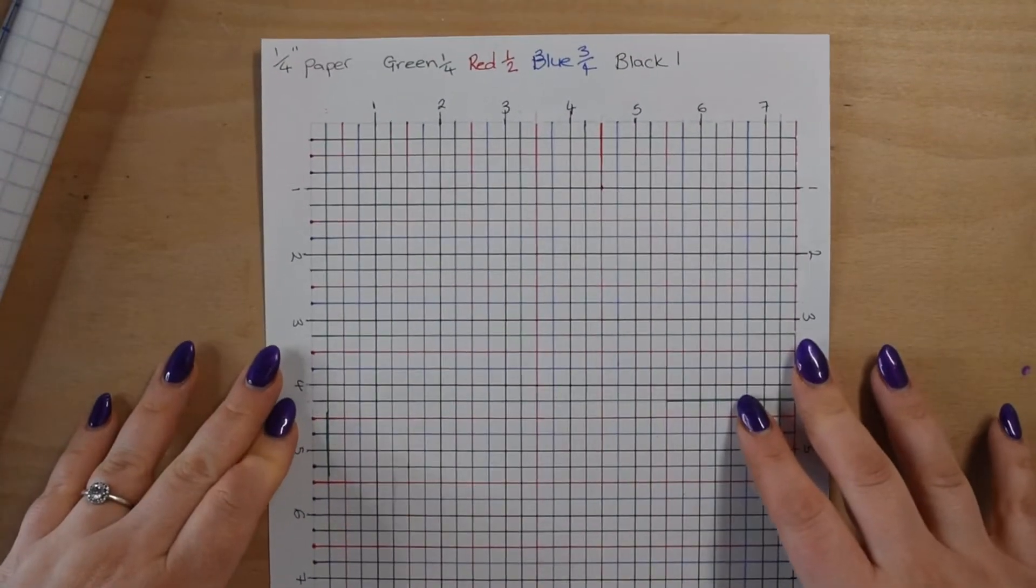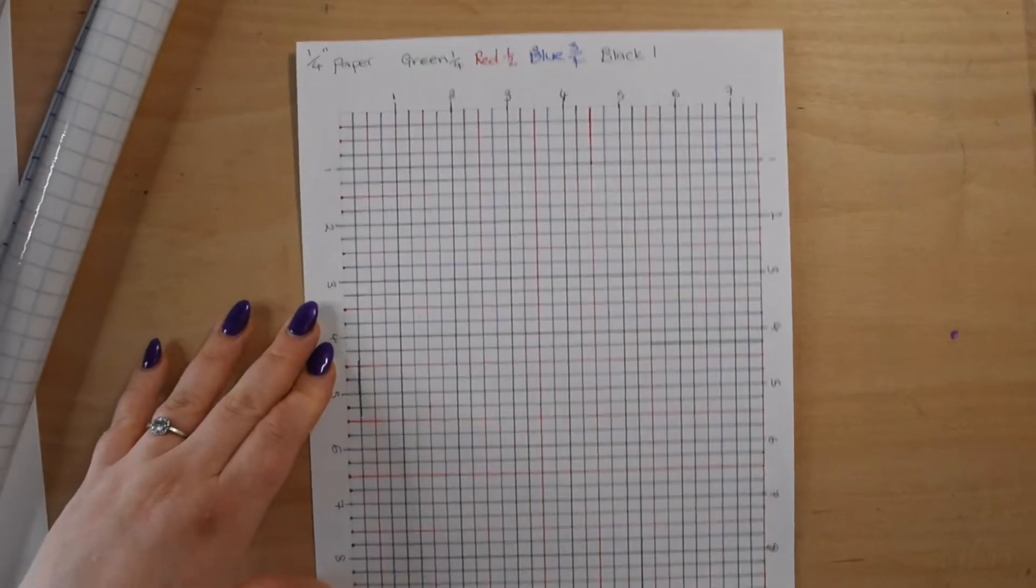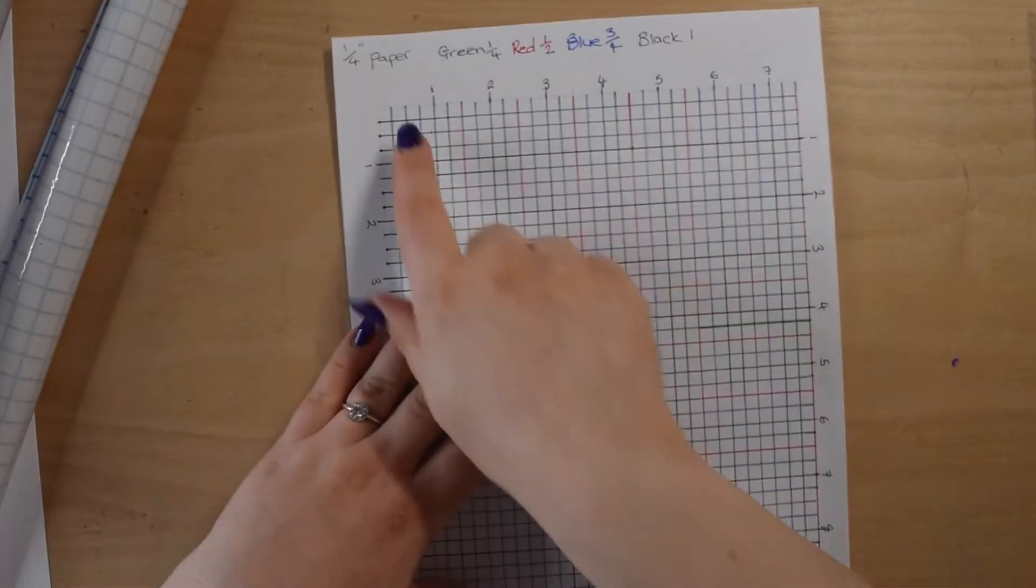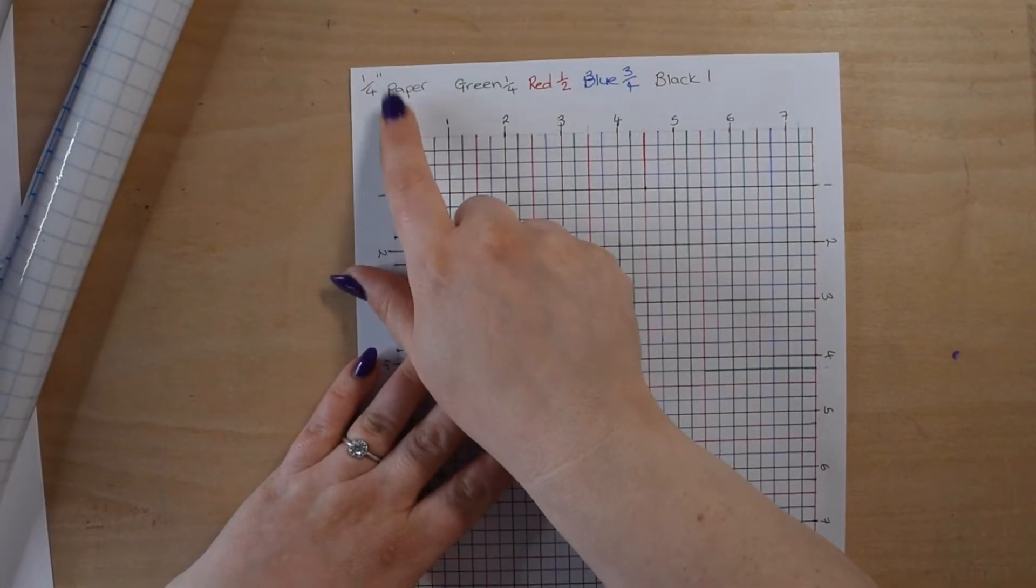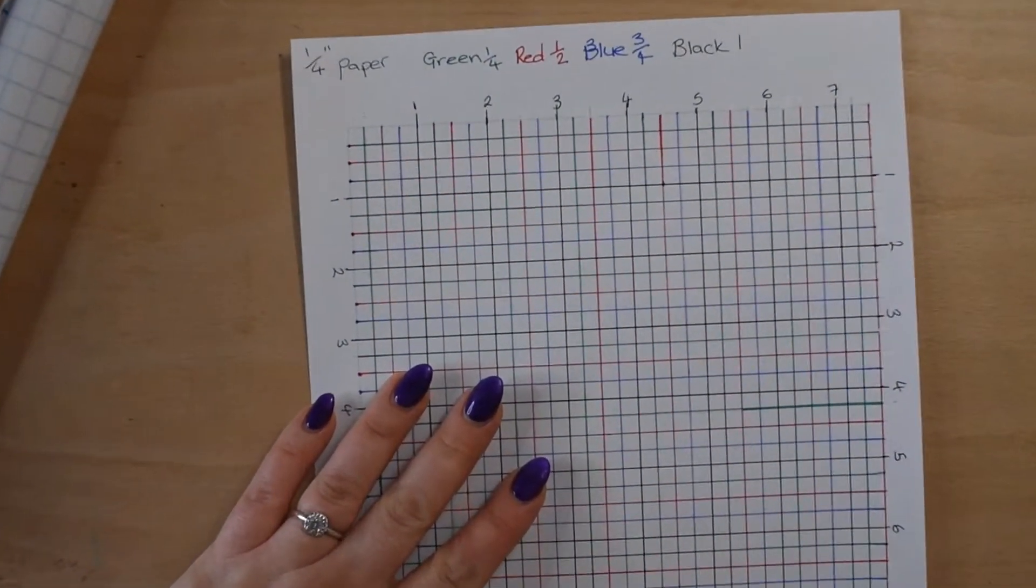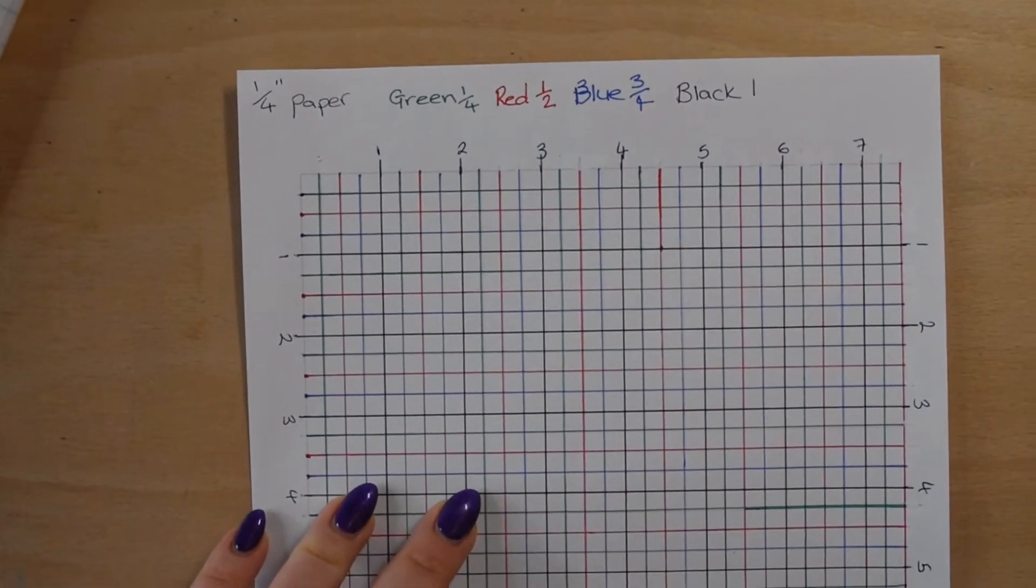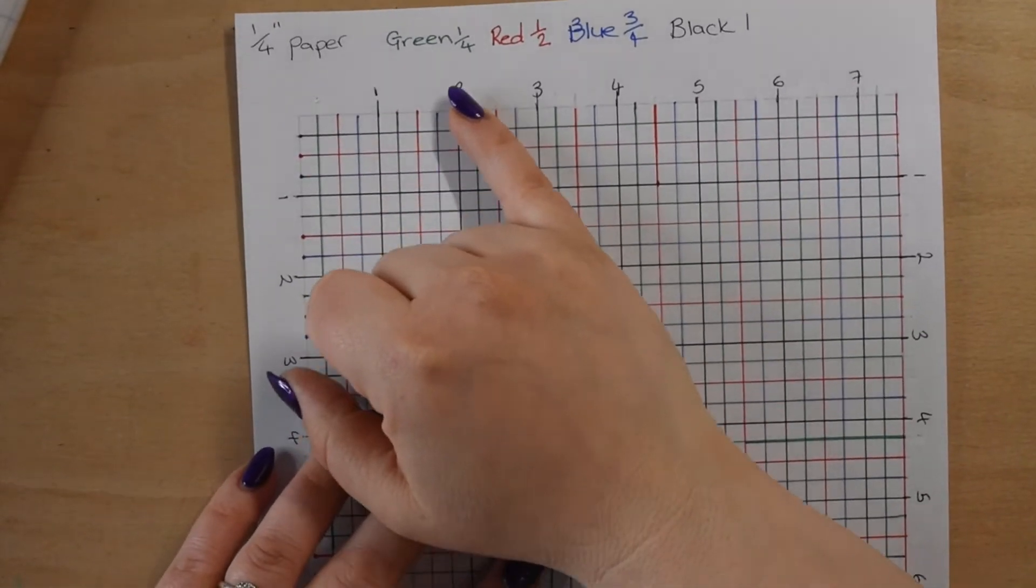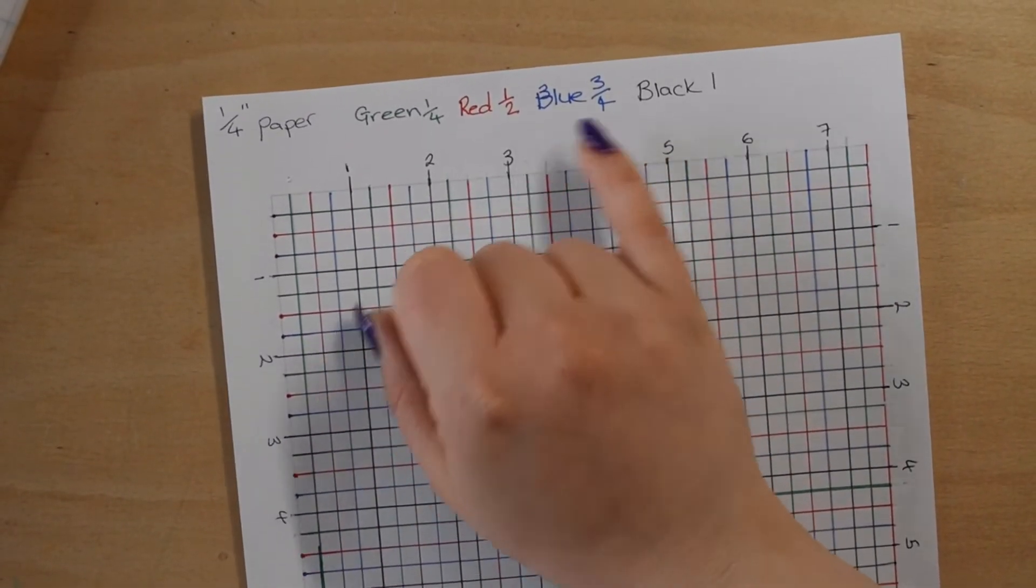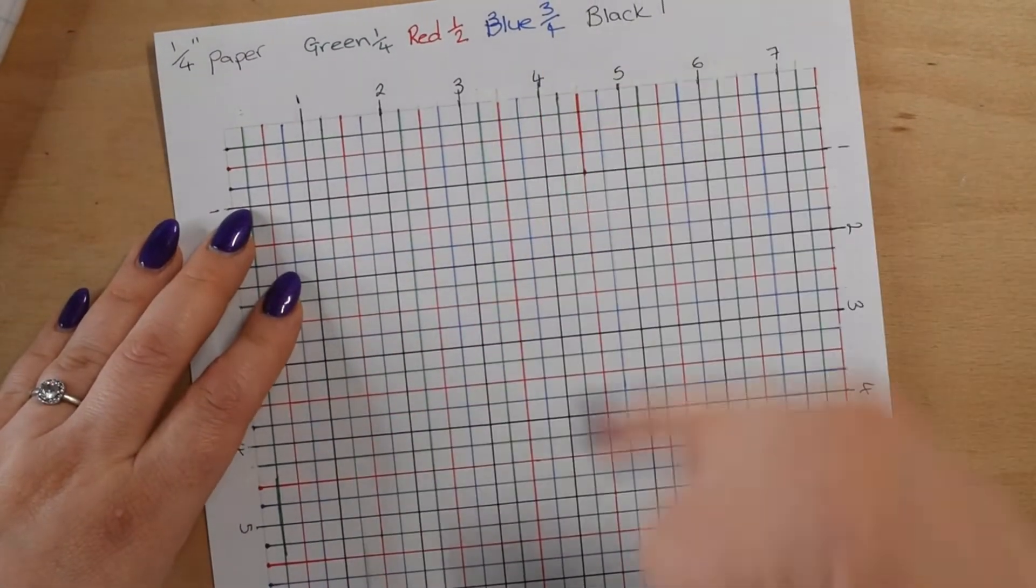I've got my paper in the portrait orientation. As you can see, I've wrote down what size grid I'm using. I've picked four colors to use as my guidelines.